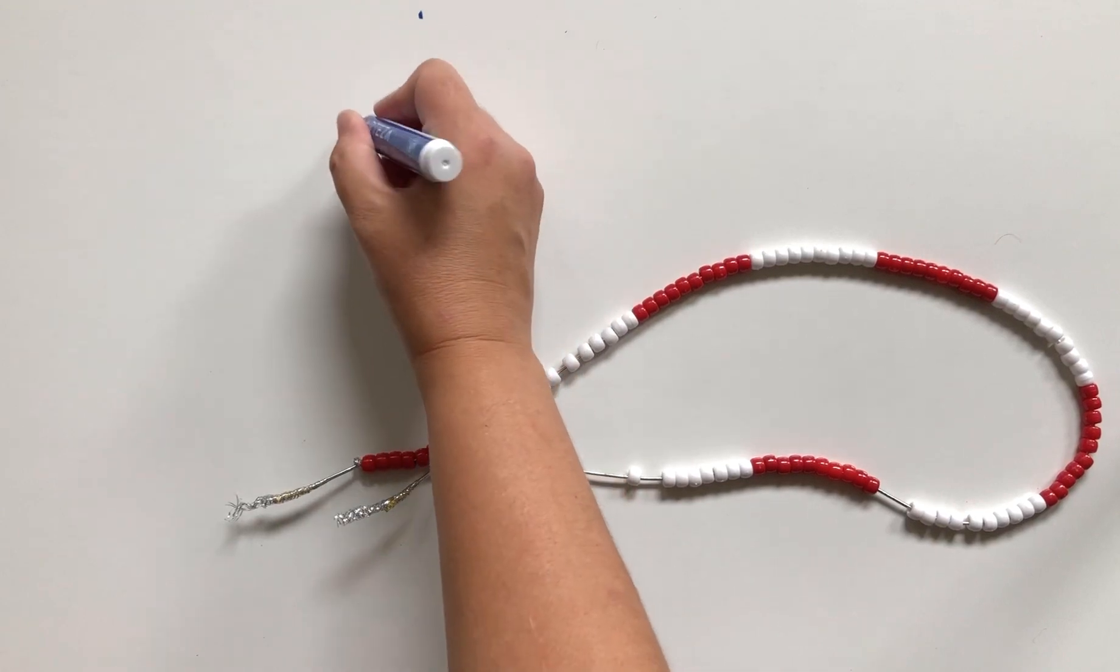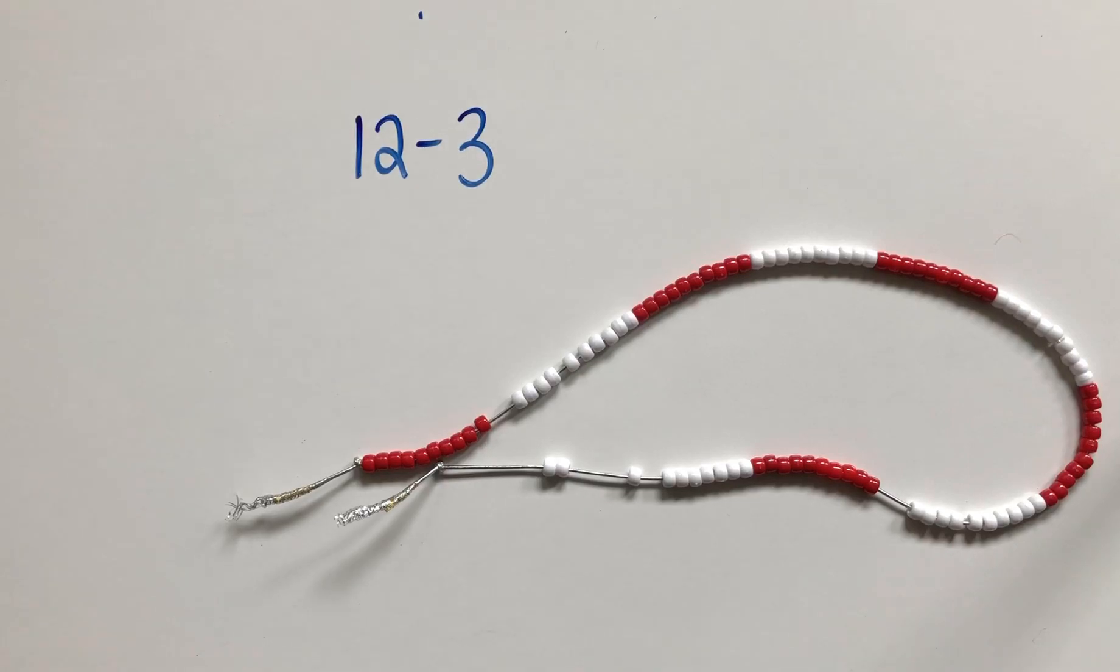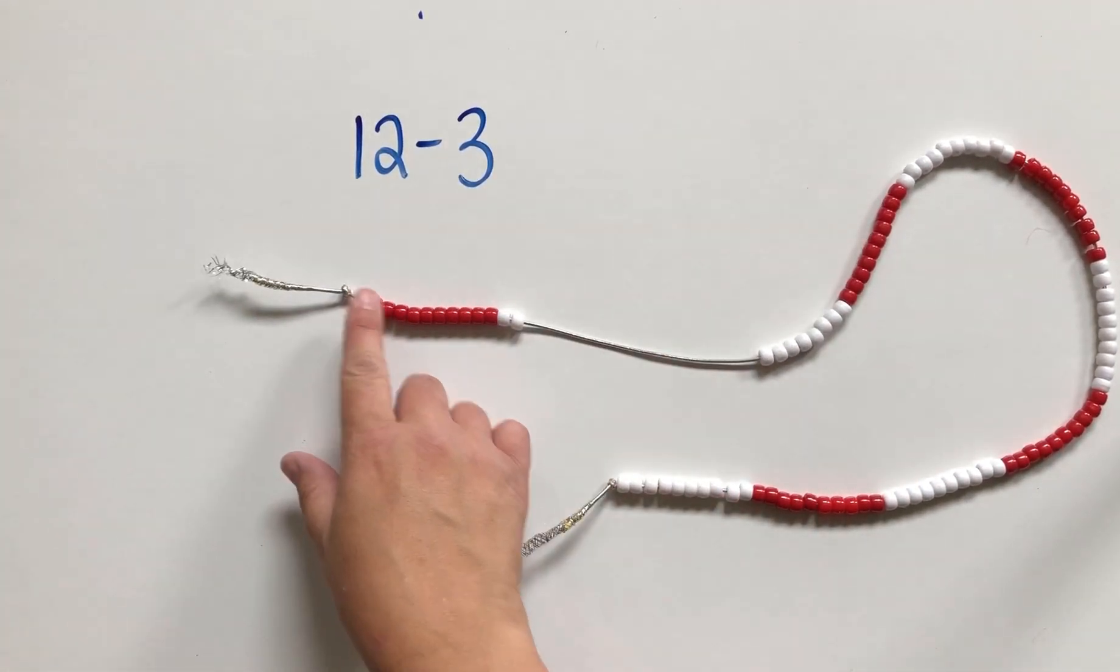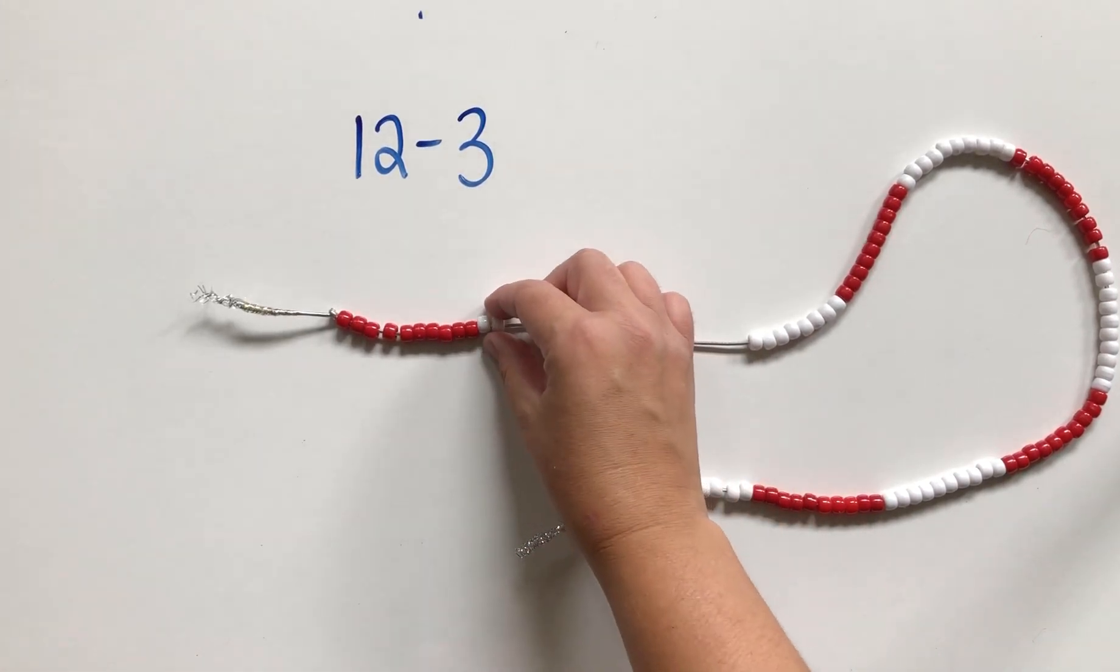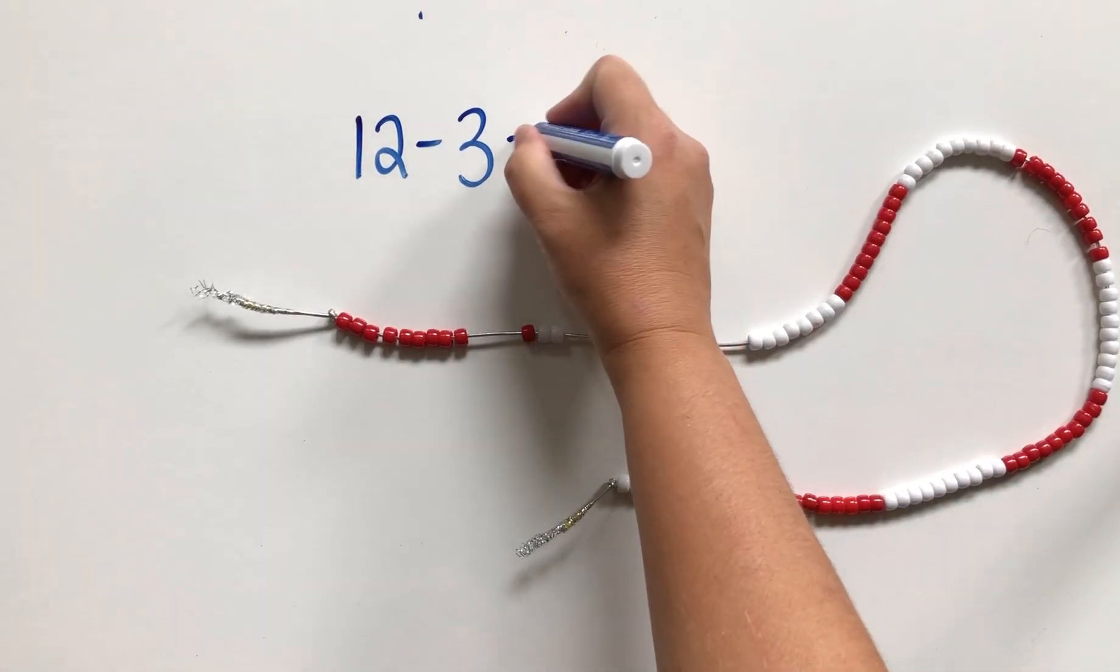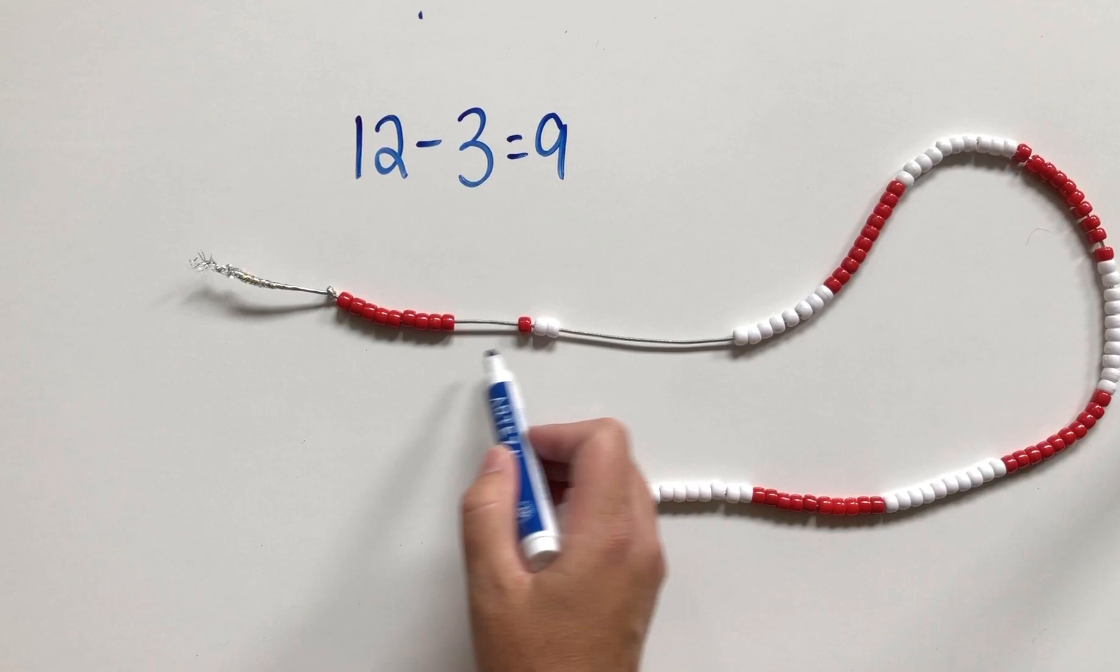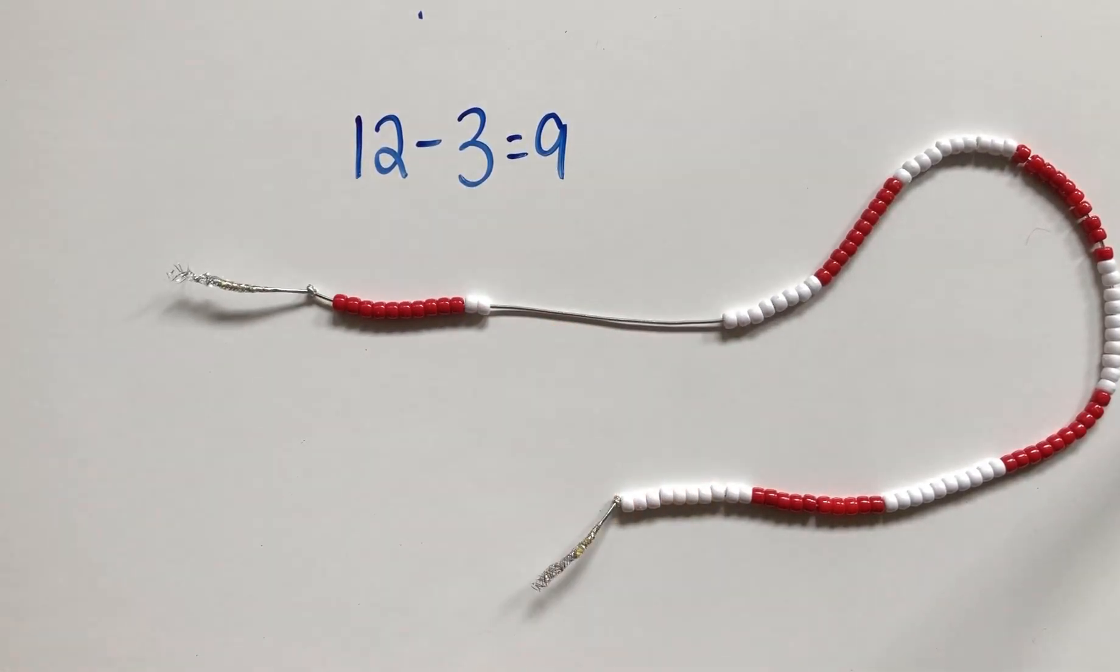Let's talk about counting back. If we are trying to model 12 subtract 3, we are going to start with 12. Here's an important note to make: we don't need to count one by one, do we? We know that there's already 10 in a group, so 10 reds and two whites will make 12. Then we're just going to count back: 11, 10, 9. We can see that we have 9 left. This also makes it very visual that we have two parts—three and nine are our parts, and 12 was our whole.